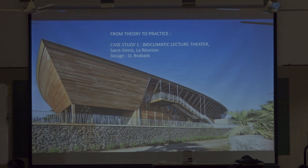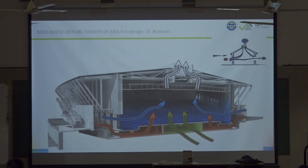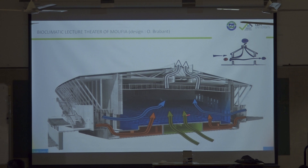Case study: the bioclimatic lecture theater I presented two days ago — I will now focus more on natural ventilation. The building is a light structure in wood. The principle: we created a low pressure shaft in a U-shape of 3 by 3 meters. The wind is accelerated there — this is the natural pump. We have louvers on each side; the total distance is 30 meters, more than the 10-meter threshold, which is why natural cross ventilation alone doesn't work here.